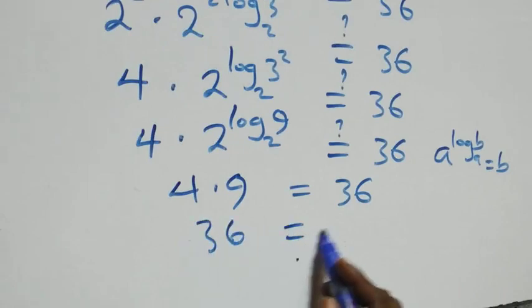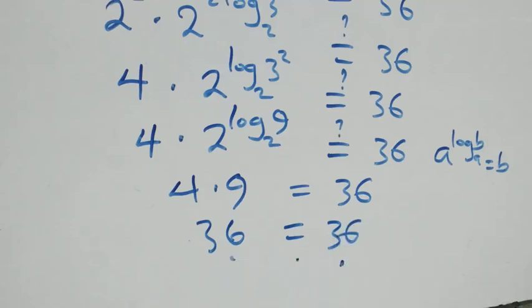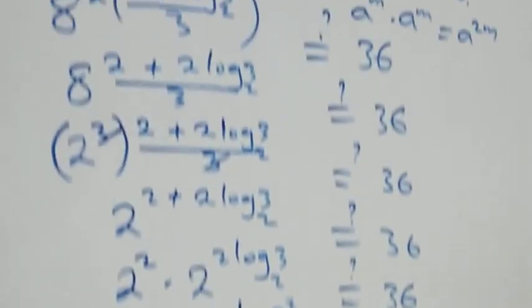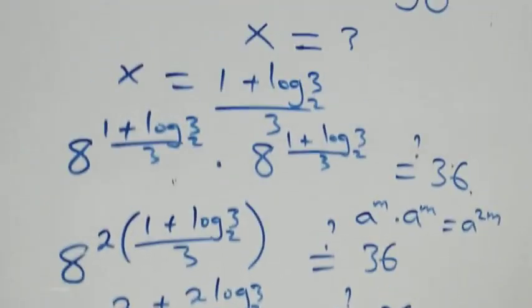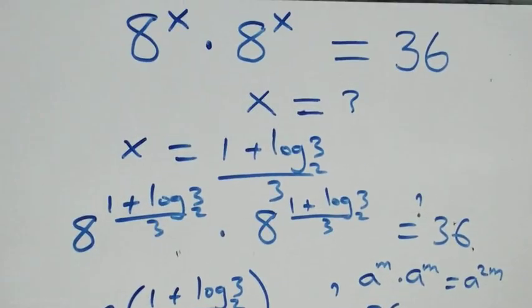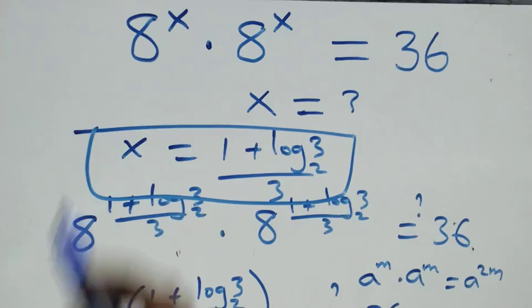We have 4 times 9 equals 36, which equals 36 on the right-hand side. The left-hand side equals the right-hand side, so we conclude that x equals (1 plus log 3 base 2) over 3 satisfies this given problem. Thank you for watching — don't forget to subscribe for more videos.